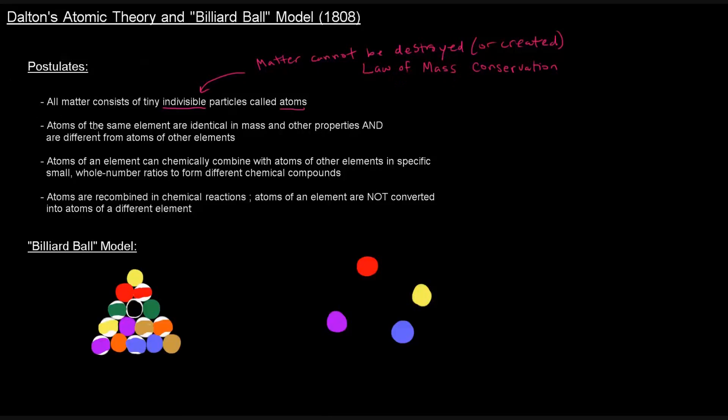The next thing he said was that atoms of the same element are identical in mass and other properties. So atoms of the same element, as long as you have atoms of a particular element, all of those atoms of that element will have identical mass and properties, other properties.